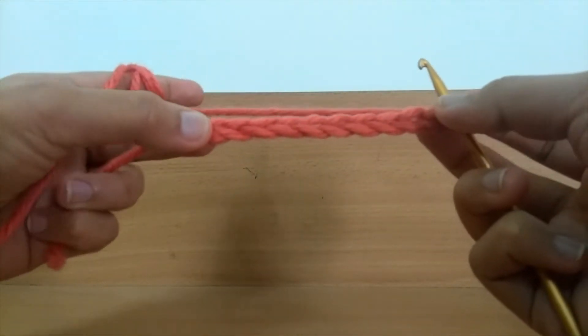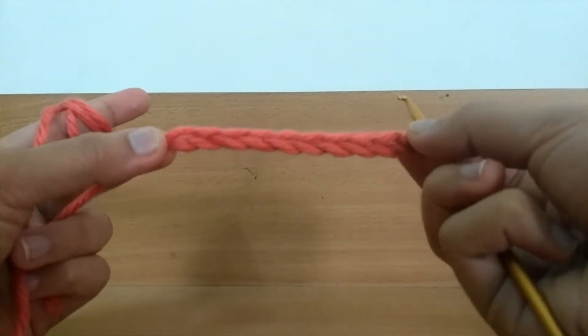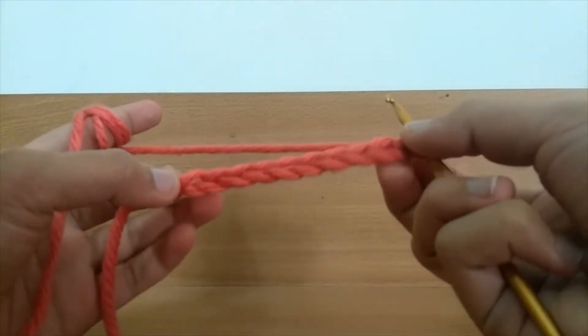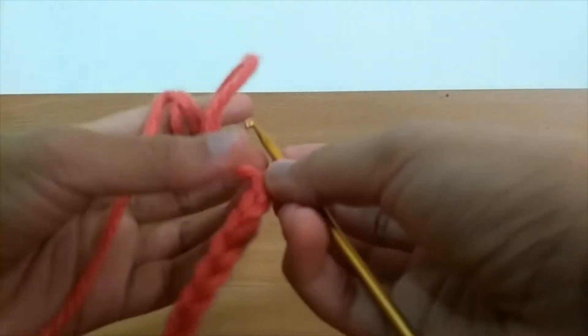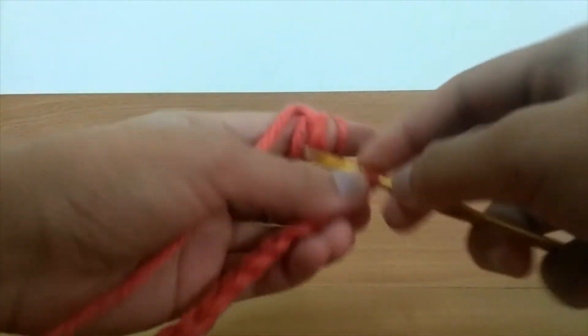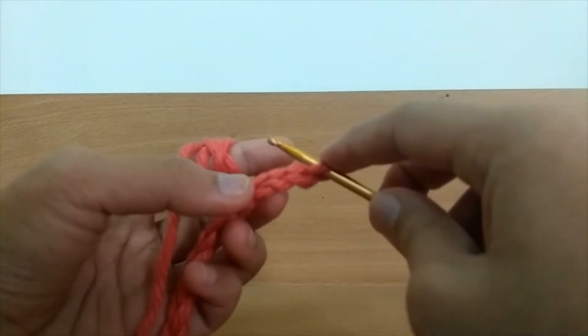I'm only going to be doing a swatch, but your square needs to be six inches wide. Start by chaining one and then insert your hook into the chain just before the one that you just made.